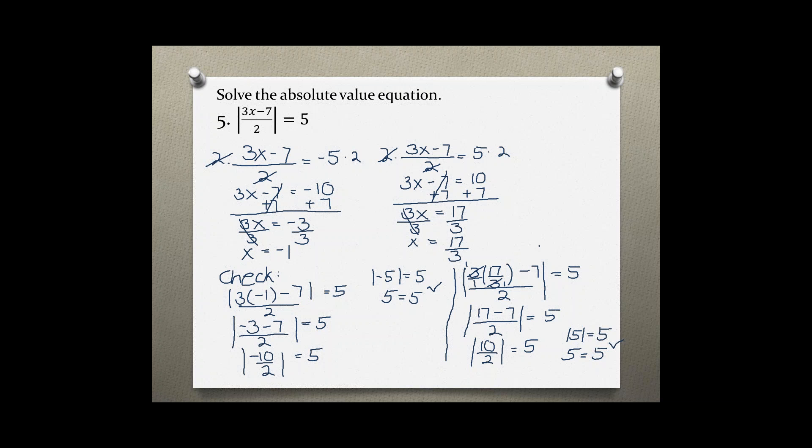So this is also a true statement. This solution checks out, so negative 1 and 17 over 3 are both solutions to this absolute value equation. Thank you.